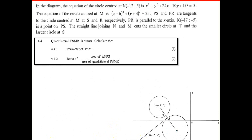The next question asks for the perimeter of PSMR. Looking at the diagram, PSMR is a kite. MS = MP = 5, because they are both radii of circle M. Also, two tangents from a common point are equal. So we need to find the length of PR or PS.